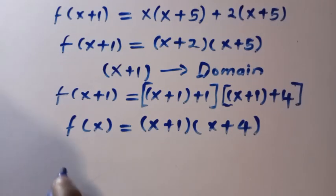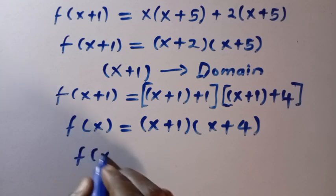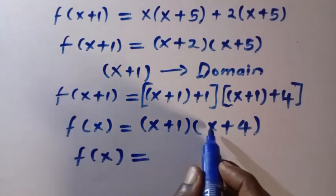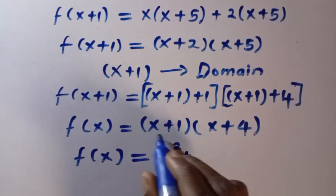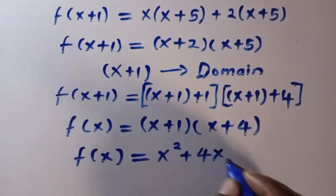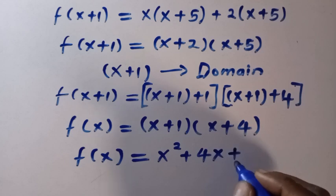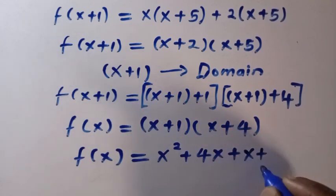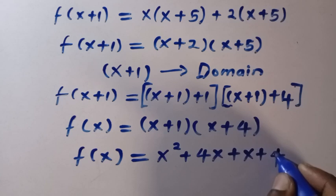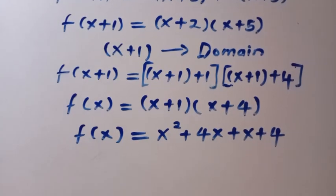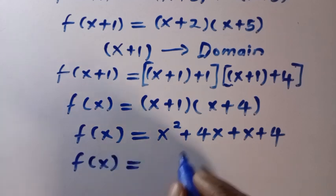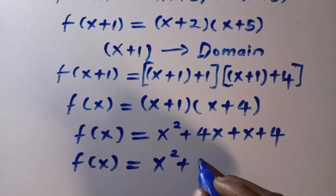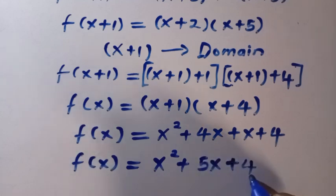Then, we can see this as f of x equals, when we expand this, x times x, that is x squared, plus x times 4, we have 4x plus 1 times x, that is x, and 1 times 4, we have 4. And next, we have this as f of x equals, so here is x squared plus 5x plus 4.